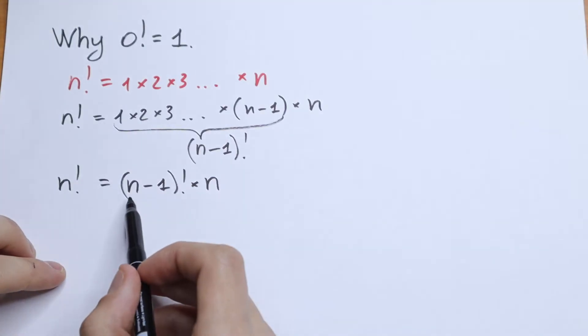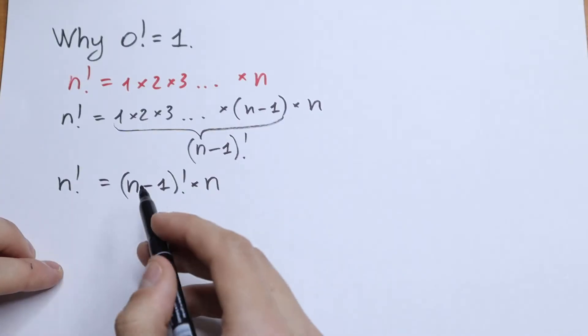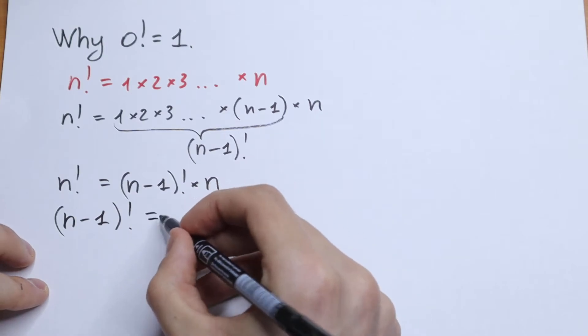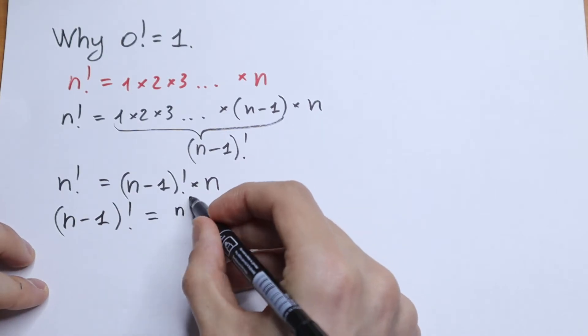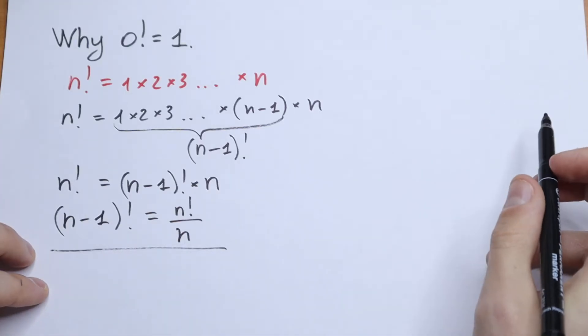And let's find n-1 factorial from here. We need to divide by n both sides. So n-1 factorial will be equal to n factorial dividing by n. And this is formula that we need. We need this formula. And take a look.